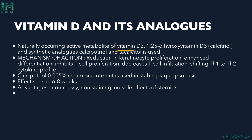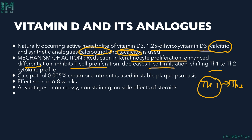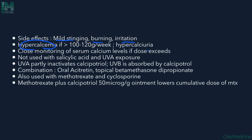Vitamin D analogues: naturally occurring vitamin D3 (1,25-dihydroxyvitamin D3) is used. We have calcitriol, calcipotriol, and calcitriol available. Mechanism of action: they reduce keratinocyte proliferation, enhance differentiation, inhibit T-cell proliferation, and decrease T-cell infiltration. Calcipotriol is available as 0.05% and can be used for 6-8 weeks. It is non-messy, non-staining, with no steroid side effects. Side effects are mild stinging, burning, irritation, and hypercalcemia or hypercalciuria, so only 100-120 grams per week should be used with close monitoring of serum calcium levels if the dose exceeds 120g/week. It cannot be used with salicylic acid or UVA exposure as it is inactivated in acidic medium and by UVA. It can be combined with oral acitretin, topical betamethasone, or methotrexate.